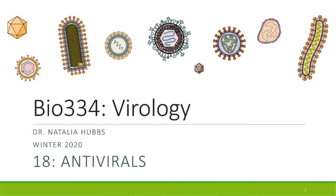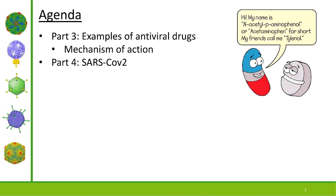So what we're going to do is pick up where we left off. At the end of day one, we started talking about part three, which is all about examples of antiviral drugs — mostly focused on resistance and how resistance occurs broadly. Today we're going to talk about mechanisms of action for different antiviral drugs, and then we'll finish by talking about the current coronavirus pandemic and some of the drugs being used in patients.